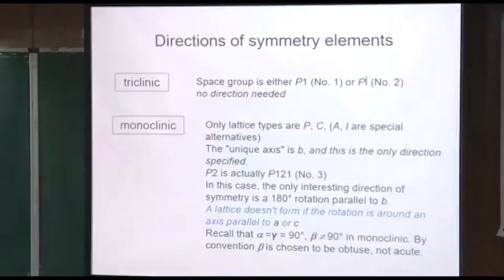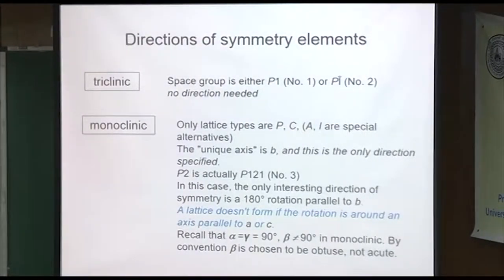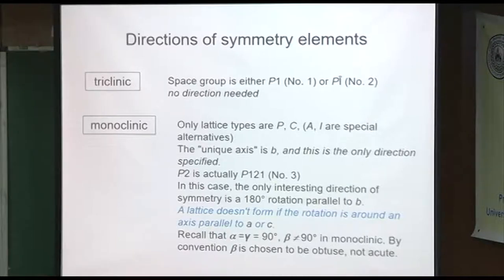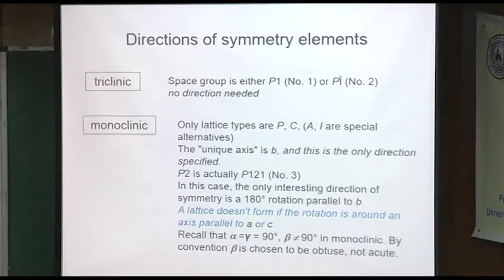Monoclinic: the only lattice types are primitive and n-centered. The C can also be A or I in this case. But the unique axis is always B — remember that. Sometimes you'll see the space group specified with a placeholder in positions you don't need. For example, space group P2: the 2 is a rotation by 180 degrees around the B axis. Sometimes it's written as P121 because there's nothing happening along A or C.